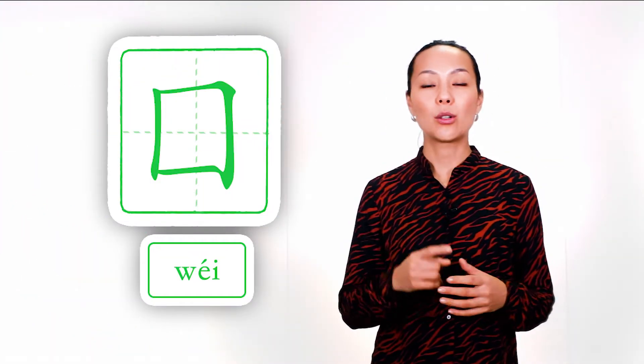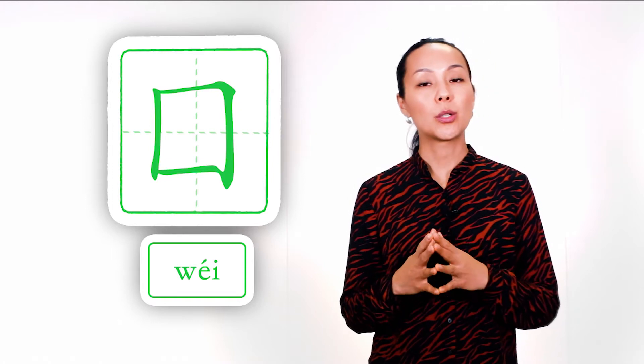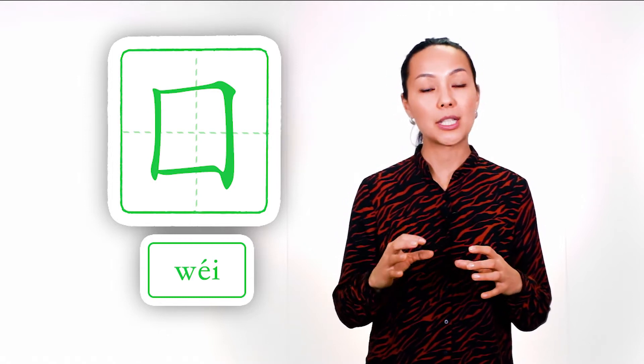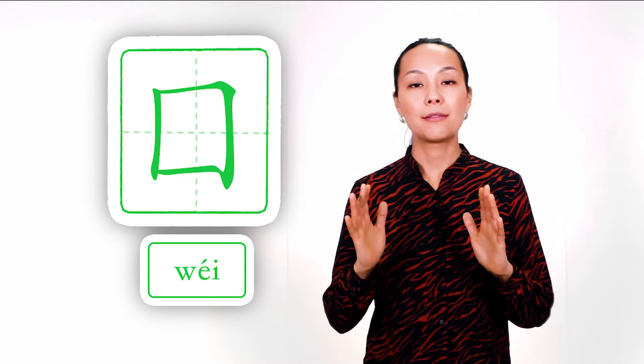Luckily this radical has only one form. Please be very attentive. Do not confuse it with another radical, mouth. They both look like squares, but in the case of mouth it's a small square, and in the case of borderline it's a big square, and we always have something inside of this square.